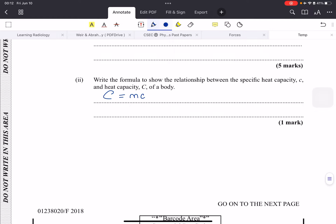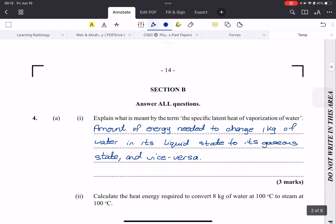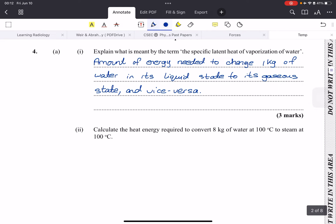The specific latent heat of vaporization of water simply means the amount of energy needed to change one kilogram of water in its liquid state to its gaseous state or steam, and vice versa. If you want to change steam back into water, that's how much energy you will need. We call it the latent heat of vaporization, and for ice to water and water to ice, it's called the latent heat of fusion.